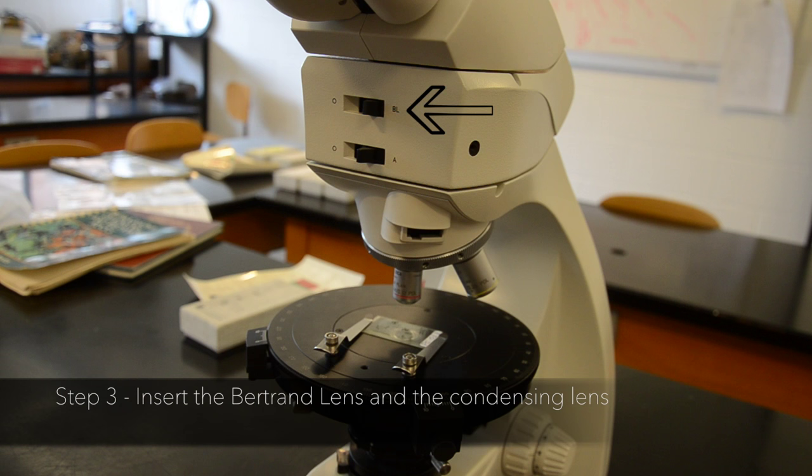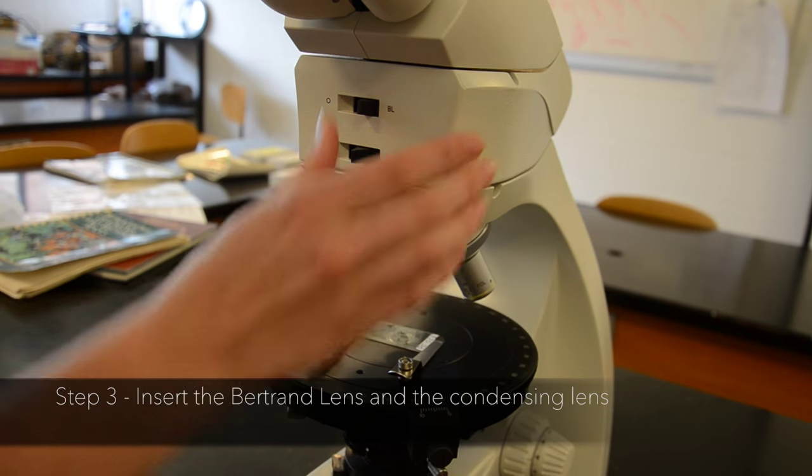Step 3. Insert the Bertrand lens and the condensing lens. For this microscope, the switch labeled BL inserts both.